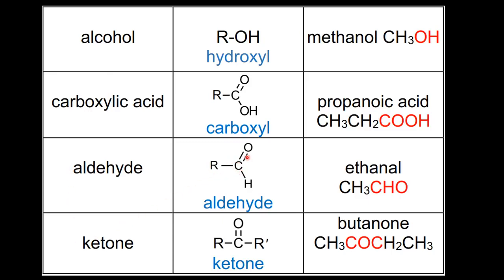The aldehydes and the ketones both have a carbon double-bonded to an oxygen, which is a carbonyl group. In the aldehydes, the carbonyl group is bonded to one other alkyl group. In the ketones it's bonded to two alkyl groups. An example of an aldehyde is ethanal, and an example of a ketone is butanone.